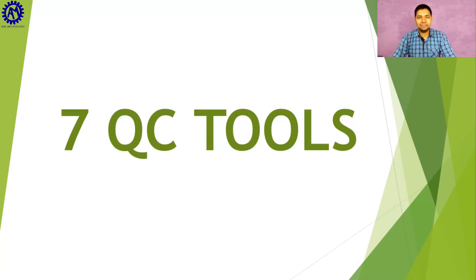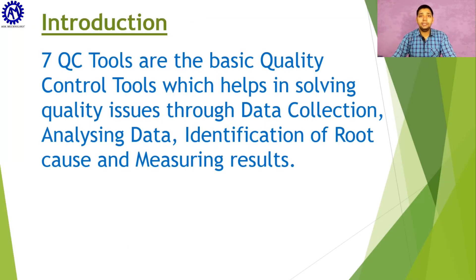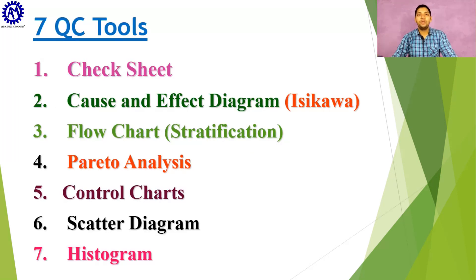Let's start with the 7 QC tools. The first question is, what are 7 QC tools? 7 QC tools are the basic quality control tools which help in solving quality issues through data collection, analyzing data, identification of root cause, and measuring results.